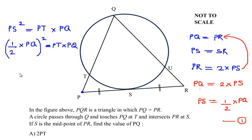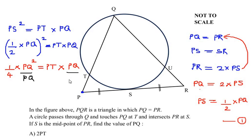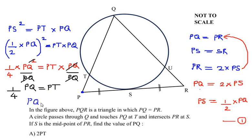Squaring the left side: one over four times PQ² equals PT times PQ. Now dividing both sides by PQ, we cancel one PQ from both sides, leaving one over four times PQ equals PT. Taking the four to the other side, we get PQ equals four times PT.